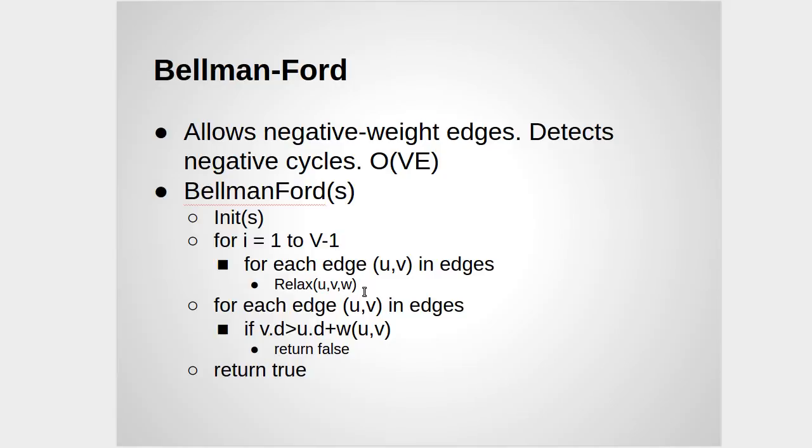The idea here is that at every step, when we run through all the edges, we're going to check through the relax method whether there is a better route to get to V using the edge from U to V.